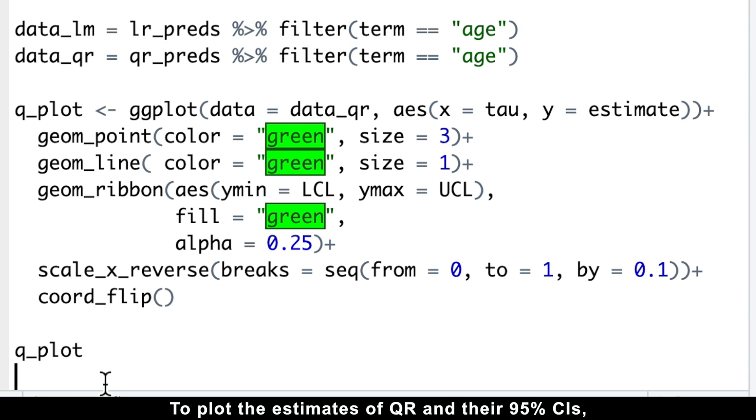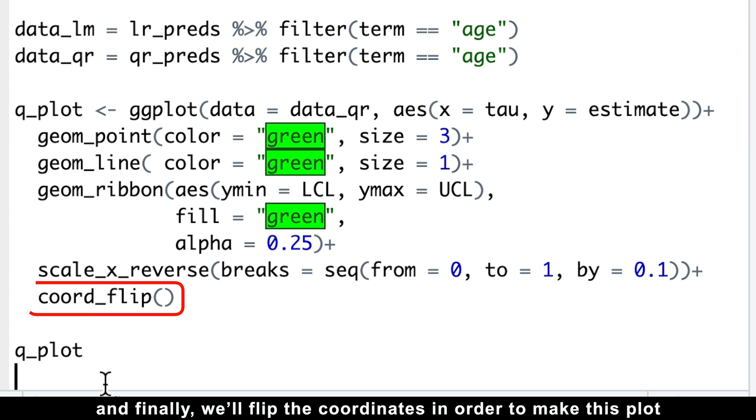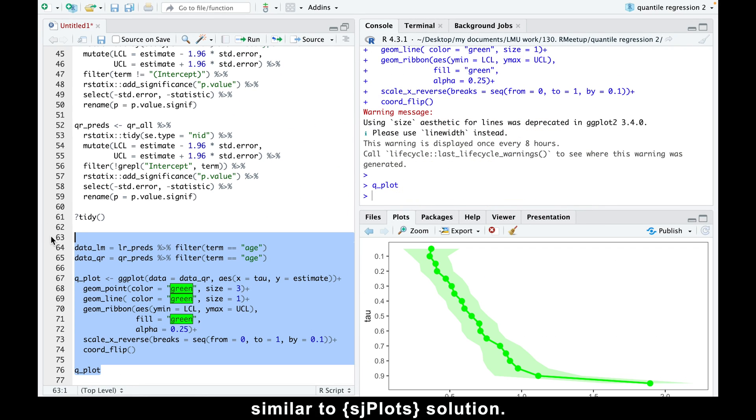To plot the estimates of quantile regression and their 95% confidence intervals, we'll use a ggplot command with classic geom_point, geom_line, and geom_ribbon functions. We'll display all possible tau values on the x-axis. And finally, we'll flip the coordinates in order to make this plot similar to sjplot's solution.